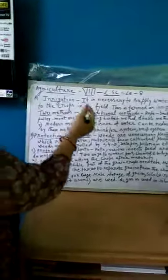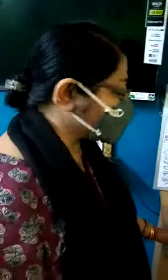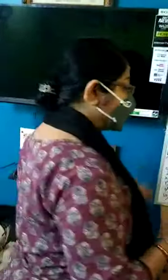What is irrigation? It is necessary to supply water to the crops in the field. Crops require water. Because without water, nutrients cannot be brought to the plant. The process of supplying water to the field is called irrigation.